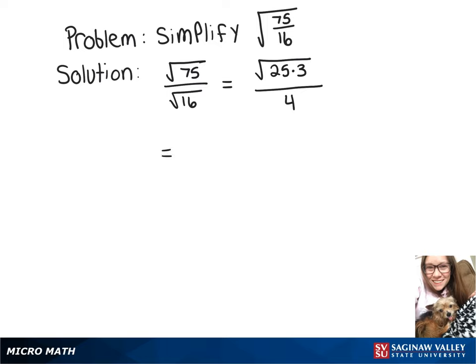And now, since the square root of 25 is 5, we can pull that out of the square root which leaves us with root 3, and then we just put that over 4. So 5 root 3 over 4 is our final answer.